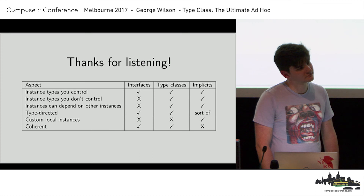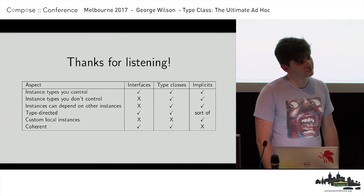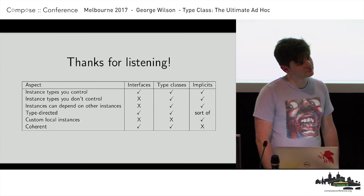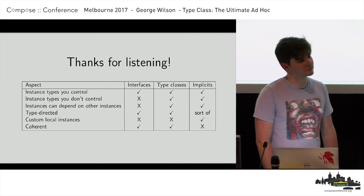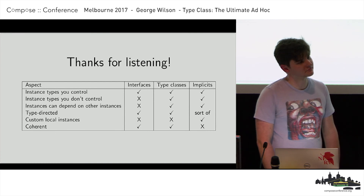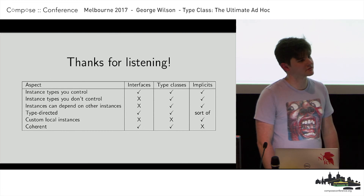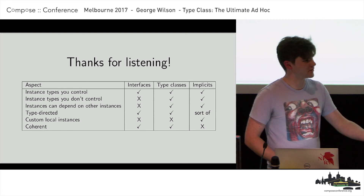Regarding orphan instances — some people actually have lots of old Haskell code where this was a very normal way of using code: you have your classes, you have new data types, and you have a separate module that integrates them where the instances are. I'm not a big fan of that, so I was very happy that I could turn the warning on. I can see the warnings and I can turn the warning into an error.